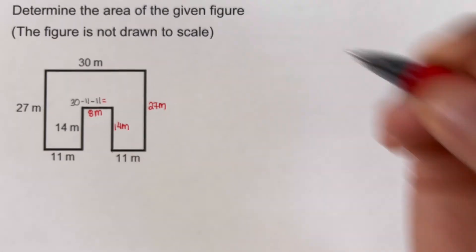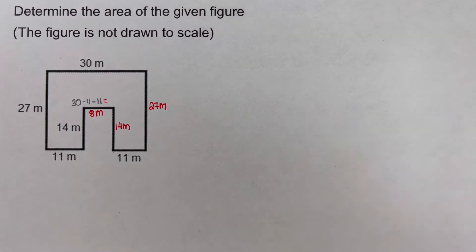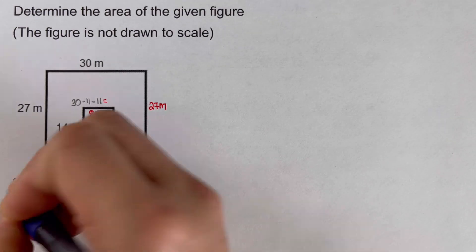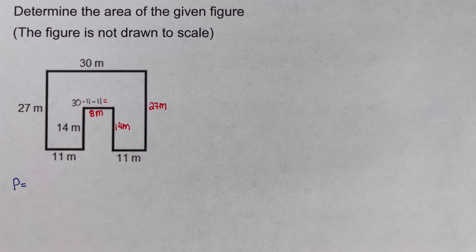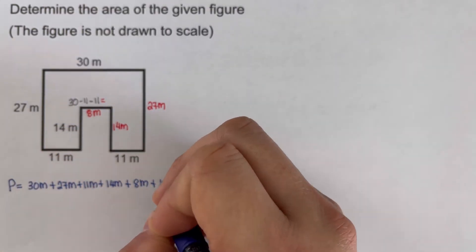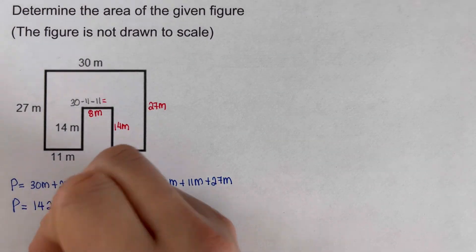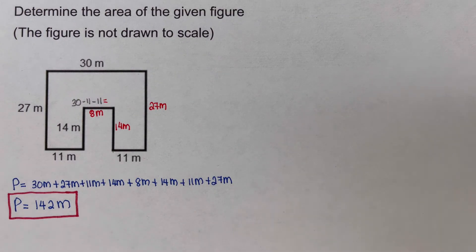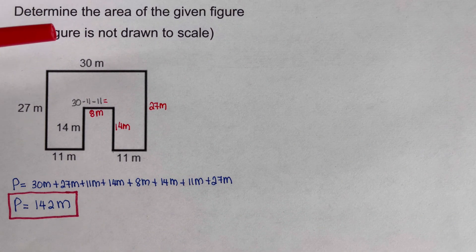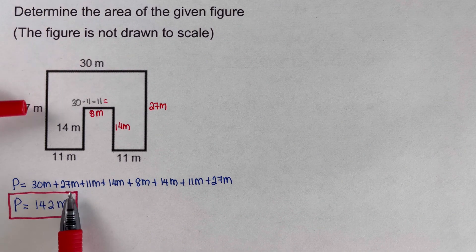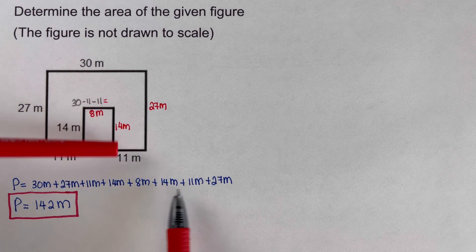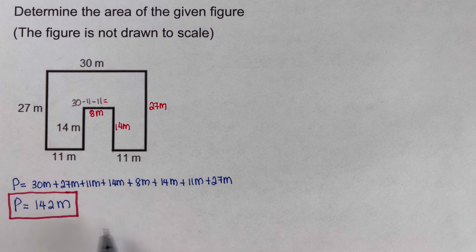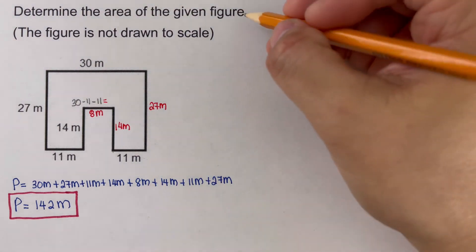Now we solve for the perimeter by adding all the measures around the figure. Adding all of the sides: 30 plus 27 plus 11 plus 14 plus 8 plus 14 plus 11 plus 27 gives us 142 meters.